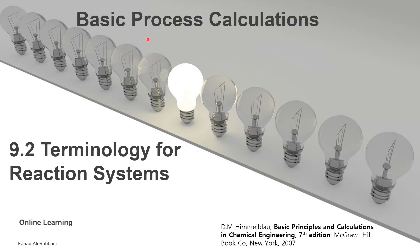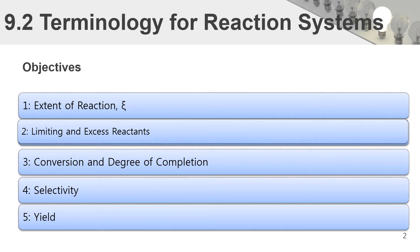We are studying basic process calculations and today's topic is terminology for reaction systems. The book we are following is Basic Principles and Calculations in Chemical Engineering by Hamilton. There are a few terminologies to describe reaction systems: extent of reaction, limiting and excess reactants, conversion and degree of completion, and selectivity. Today we will talk about limiting and excess reactants.